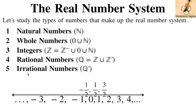Irrational numbers are denoted by Q-complement — not Q, therefore not rational. These irrational numbers were introduced in the study of geometric figures, such as circles and triangles. The constant ratio of the circumference of a circle to its diameter is pi, and the length of the diagonal of a square with side 1 is the square root of 2.